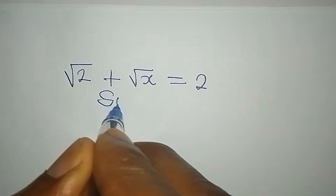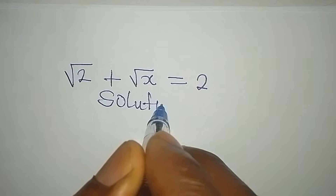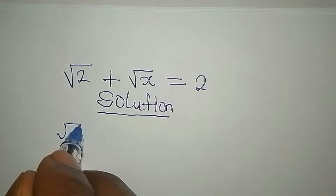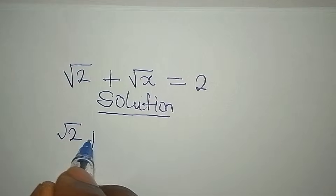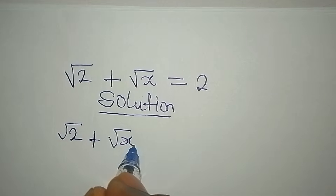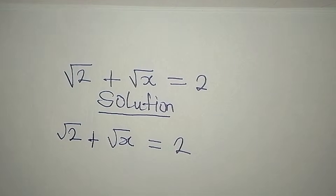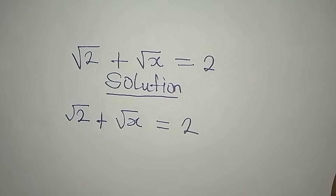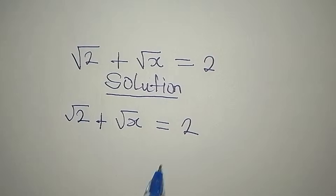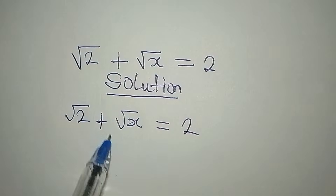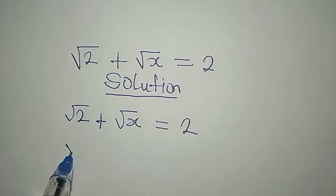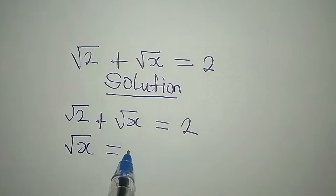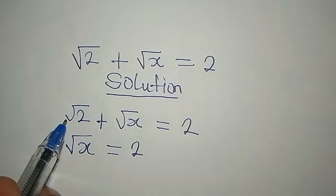Hello everyone, let's provide the solution to this problem: square root of 2 plus square root of x equals 2. So what do we do? Which of them do we make the subject first? Let's make the unknown the subject, so square root of x is going to be alone, and it's equal to 2.